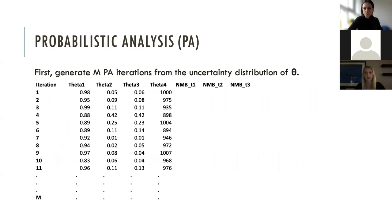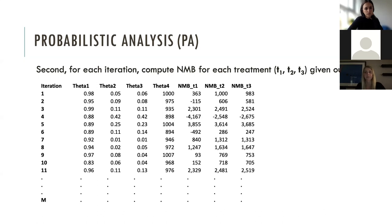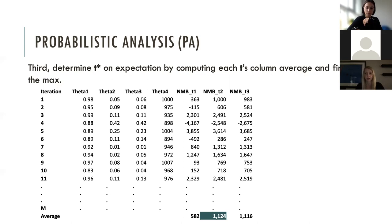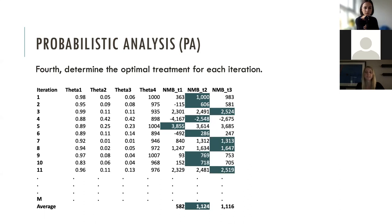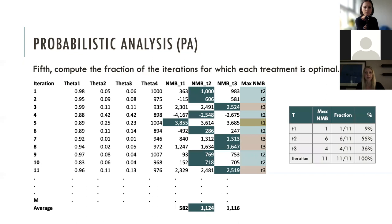To perform probabilistic analysis, we generate M PSA iterations from the uncertainty distribution of theta — here assuming four input parameters theta one through theta four and three treatment options T1, T2, T3. For each iteration we compute net monetary benefit for each treatment given the willingness-to-pay threshold lambda. We then estimate average net monetary benefit for each treatment and identify the optimal treatment on expectation — in our example it is treatment two, providing the highest net monetary benefit on average.